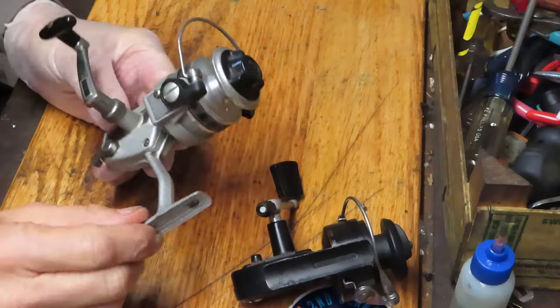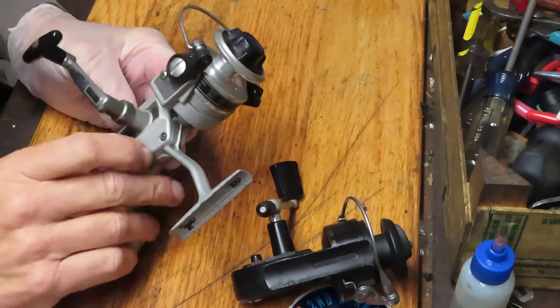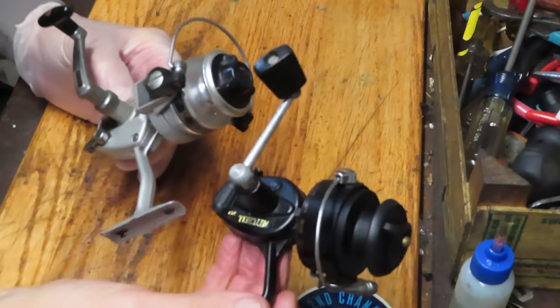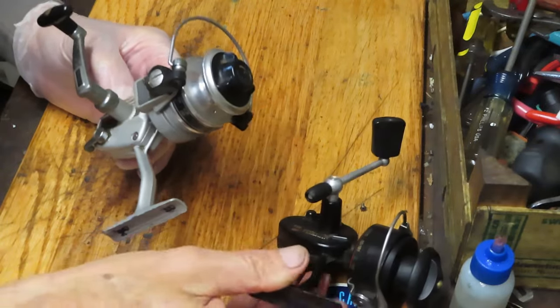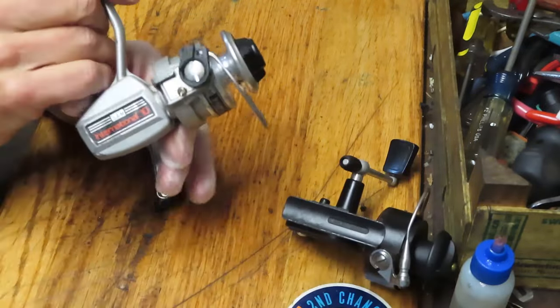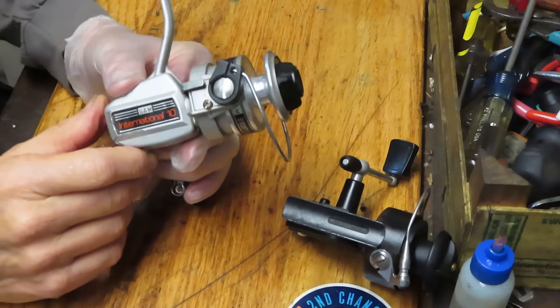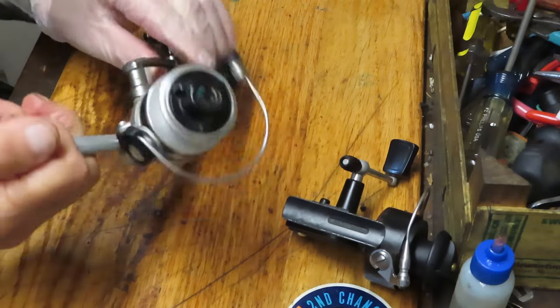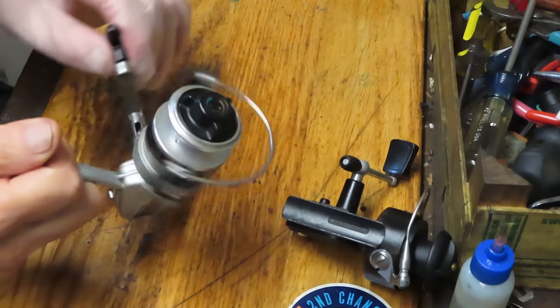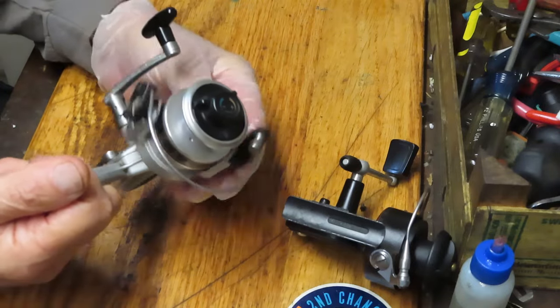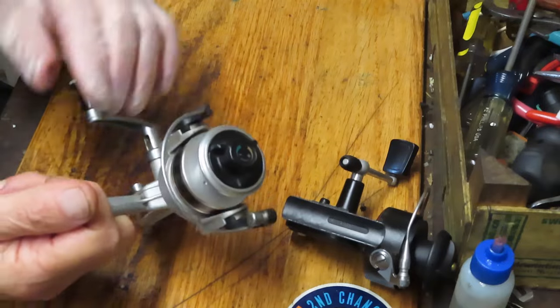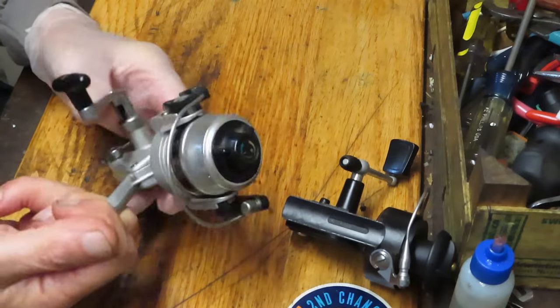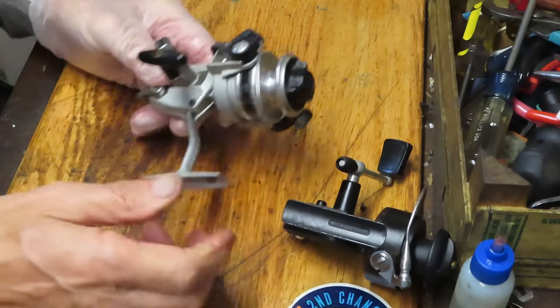I went into my to-be-done trays and found two reels that might match up nicely with that. One is a later model Mitchell 308 and there's the International 10 DAM reel. Now this one's got an interesting problem - when you go to turn it, the anti-reverse catches but doesn't catch all the time. You hear that click, click, click going on, so I don't know what's going on inside and I think that's the reel I'll work on today.